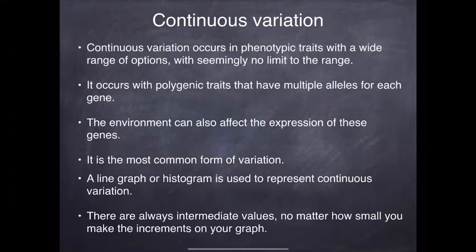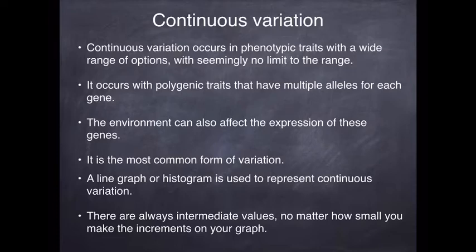The way we draw these things is different. When you have continuous variation, you're generally looking at a polygenic trait — a trait coded for by more than one gene, in which each of those traits has multiple alleles. With polygenic traits, the environment can often act upon them and cause a change. So if you think of skin colour, it is coded for by four different genes, each with multiple variations. The environment plays a role as well — when you go out into the sun, you end up getting darker. That is an example of continuous variation.